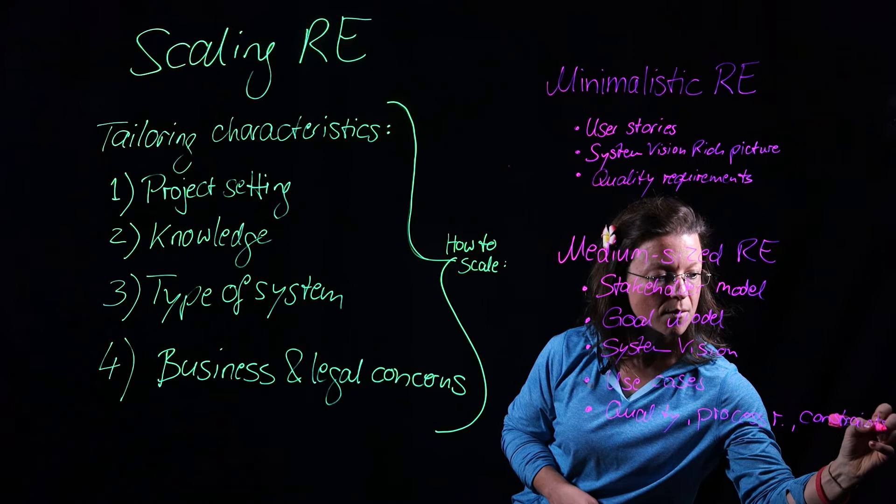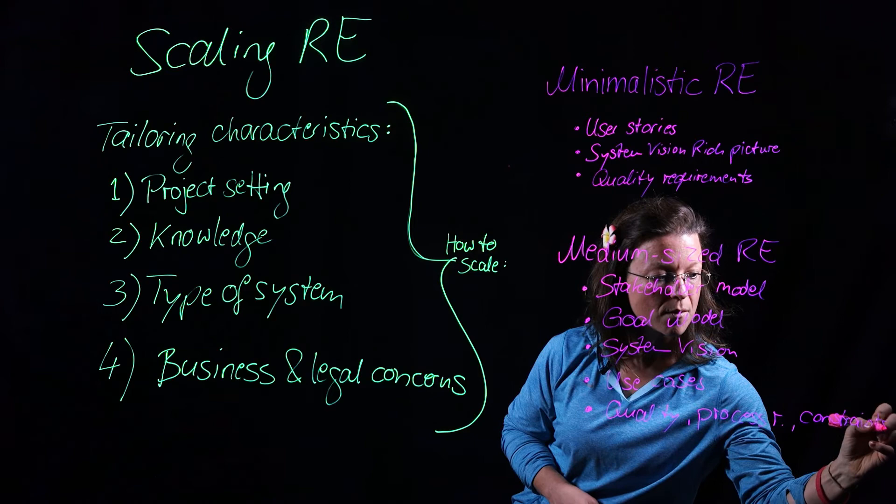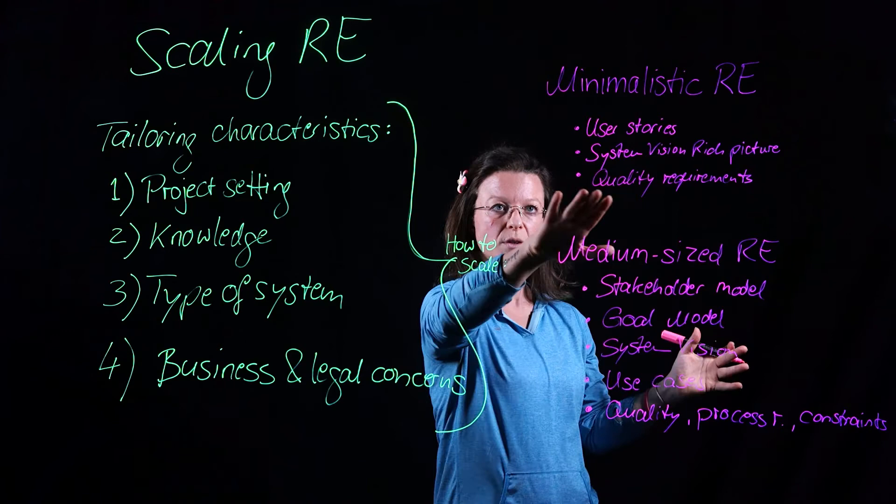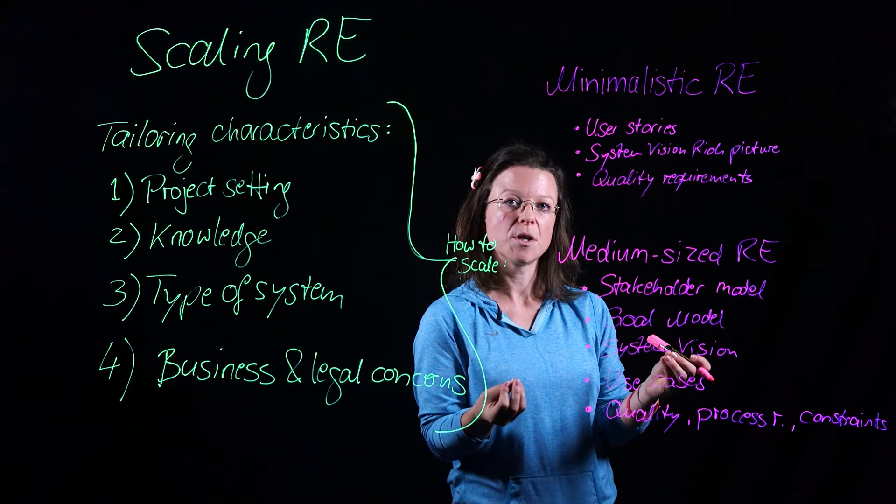This has more scope than the quality requirements in the minimalistic approach. In the process requirements, we can also make statements about how we need the development process to be carried out. And we have the opportunity to write down a lot of system constraints.